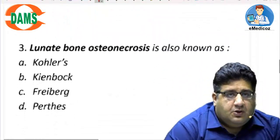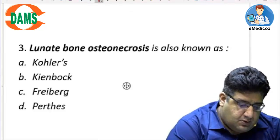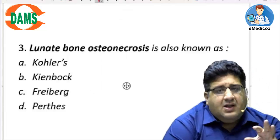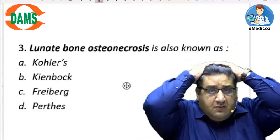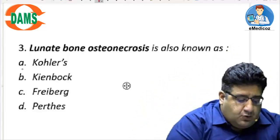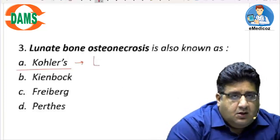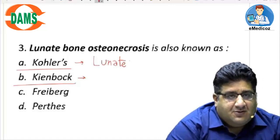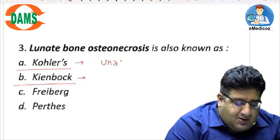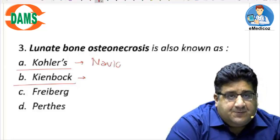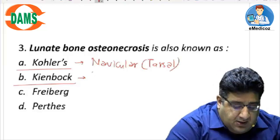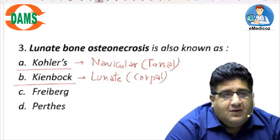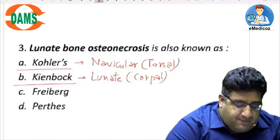Moving to the next question: lunate bone osteonecrosis. These are one-liners asked frequently and must be memorized. Kohler's disease is osteonecrosis of the navicular — remember, it's a tarsal bone. Kienbock's disease is osteonecrosis of the lunate — that's a carpal bone. This is a common confusion between Kohler and Kienbock, so always remember this distinction.